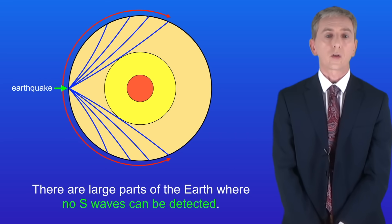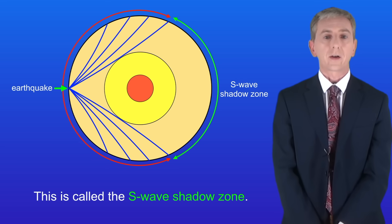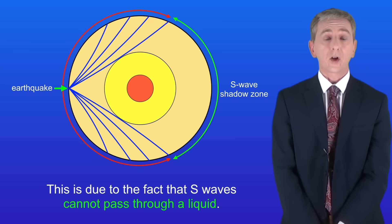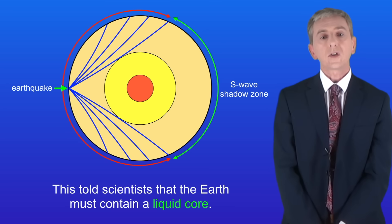However there are large parts of the earth where no S waves can be detected and this is called the S wave shadow zone. Now this is due to the fact that S waves cannot pass through a liquid and this told scientists that the earth must contain a liquid core.